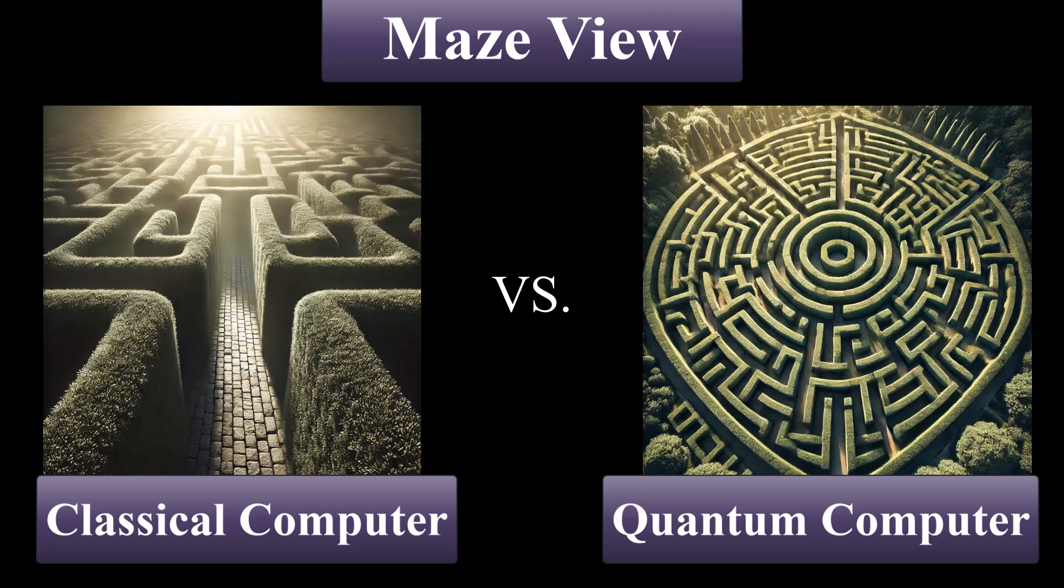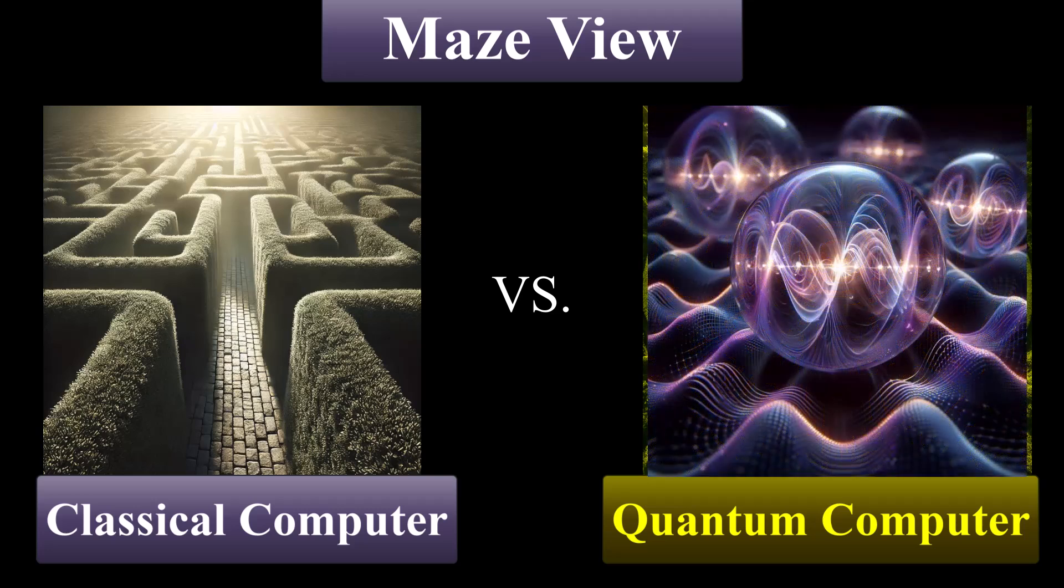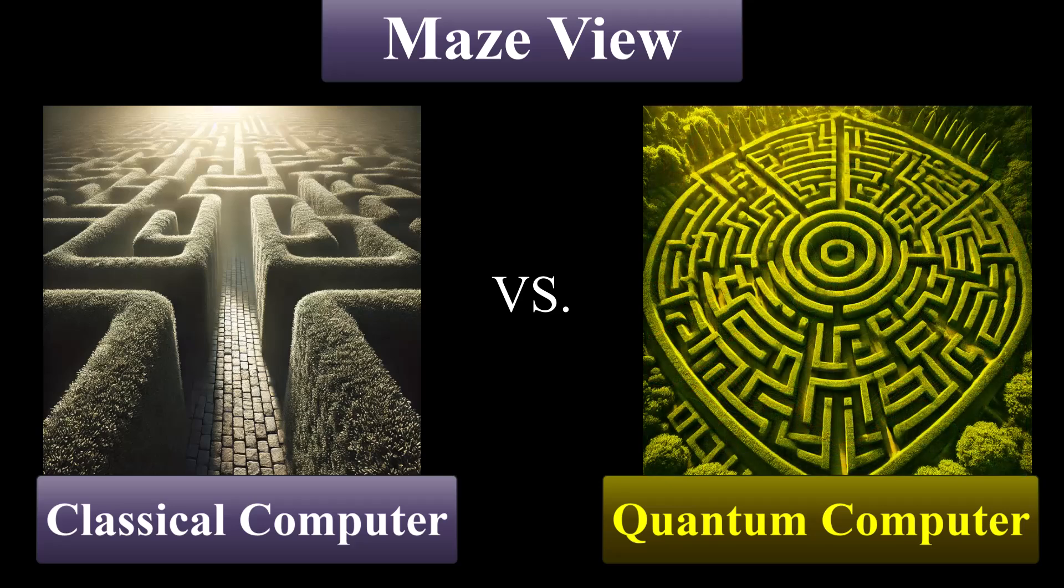Imagine standing in the middle of a maze. A classical computer would brute force its way out, testing every possible path one at a time. A quantum computer, on the other hand, uses the unique properties of qubits like quantum interference to test probabilities and reveal the solution more efficiently. Think of it like a bird's eye view of the maze. Quantum computers use overlapping waves of probability to eliminate wrong paths and highlight the right one, solving complex problems faster than ever imagined.